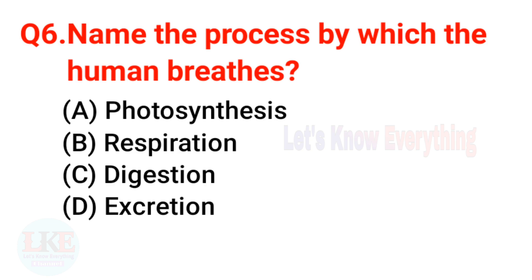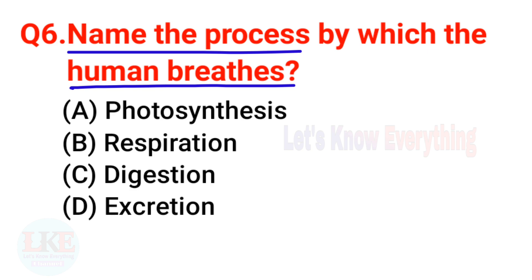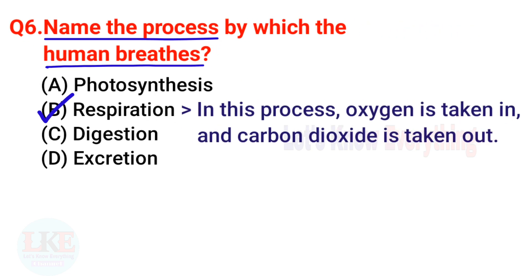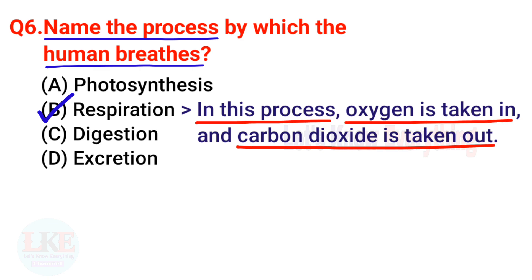Question 6: Name the process by which humans breathe. Options: A) Photosynthesis, B) Respiration, C) Digestion, D) Excretion. The right answer is option B — respiration. Respiration is the process by which a person breathes; oxygen is taken in and carbon dioxide is taken out.